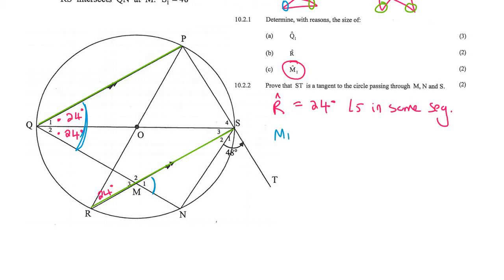So we could say that angle M1 is going to be equal to 48 degrees because of corresponding angles, because the line QP is parallel to the line RS.